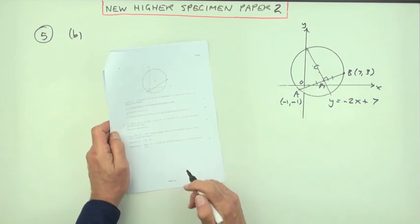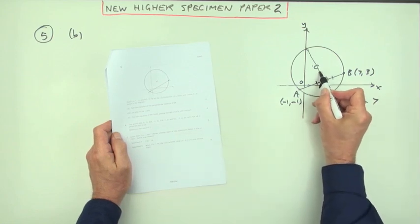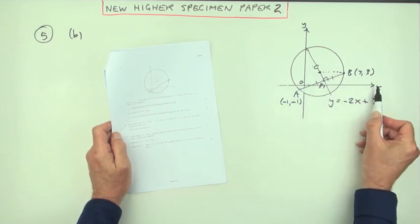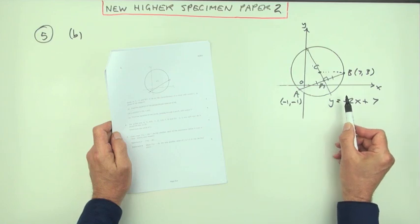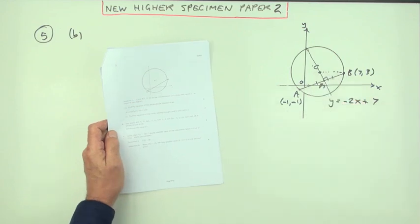Now part B gives you this further bit of information. It says CB is horizontal, so y_C = 3. C lies on y = -2x + 7. What's the equation of the circle that passes through A and B with center C?